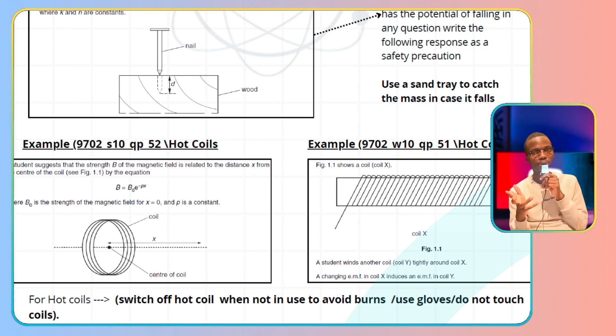If you have your notes, write down: for hot coils, this is a common safety precaution. A coil is used in some experiments like those two examples, and doing these things will keep you safe as an experimenter.